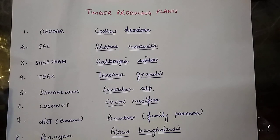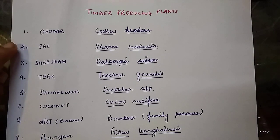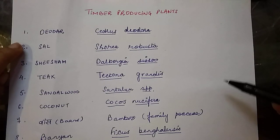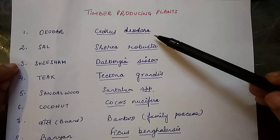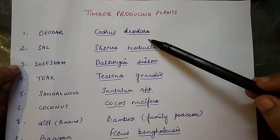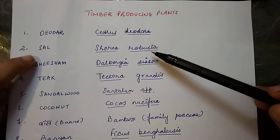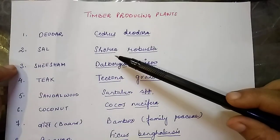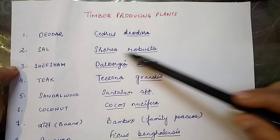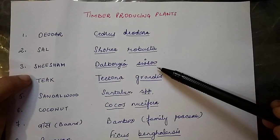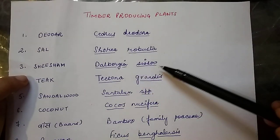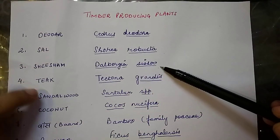Today we are going to study about the timber producing plants. The first plant is Devdar, whose scientific name is Cedrus deodara. Then we have Saal, whose scientific name is Shorea robusta. Then Shisham, whose scientific name is Dalbergia sissoo.